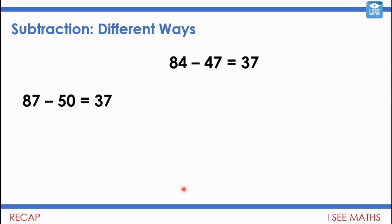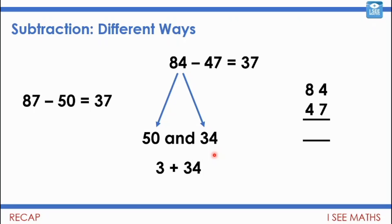The answer is 37. I could split 84 into 50 and 34. 50 is the next 10 up from 47, so take away the 47 from the 50 — that leaves 3. Add that to 34: 3 plus 34 is 37. Or using the written method: 4 subtract 7 I can't do, so I change 84 into 70 and 14. 14 take away 7 is 7, 7 take away 4 is 3, giving 37.